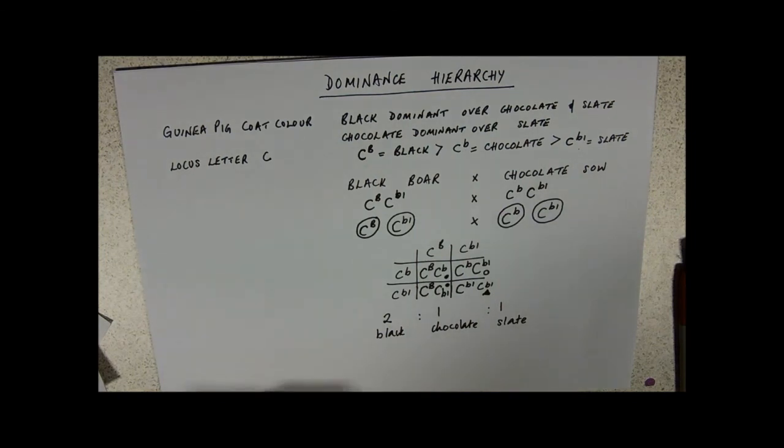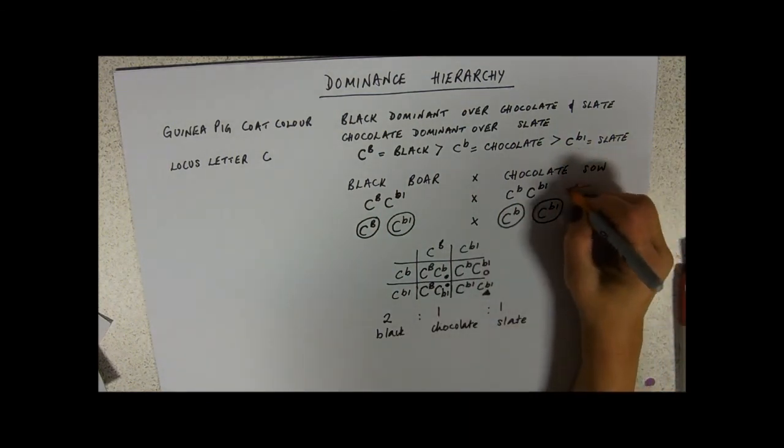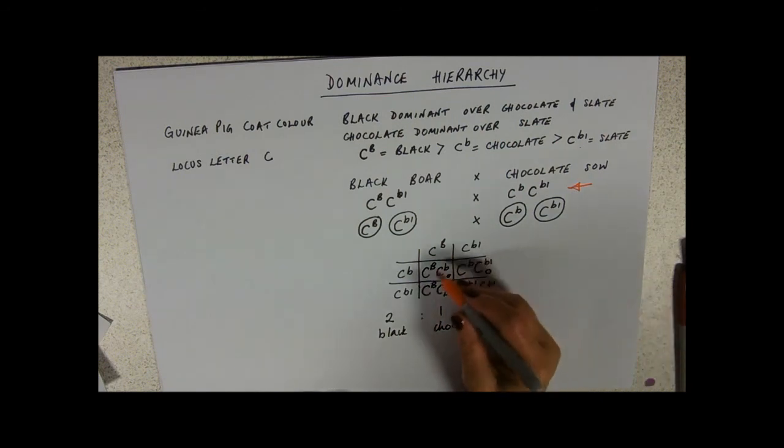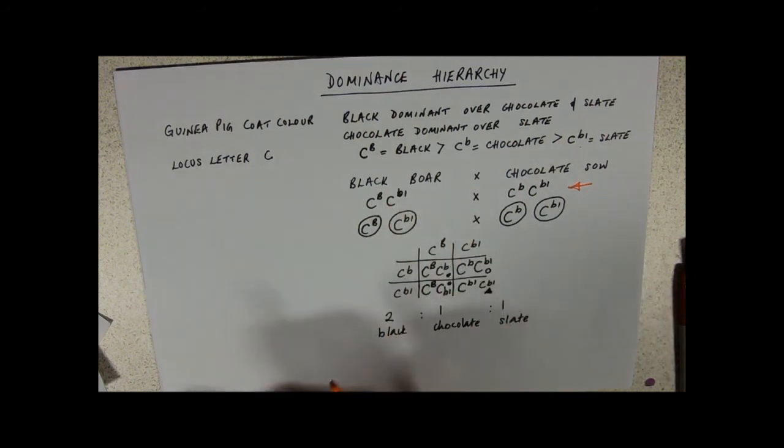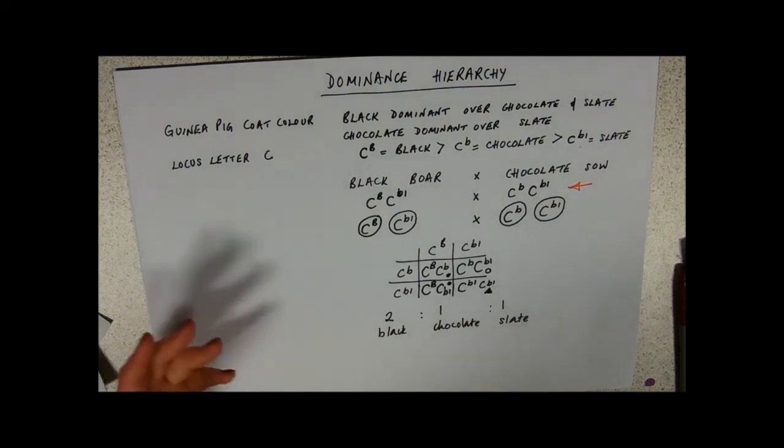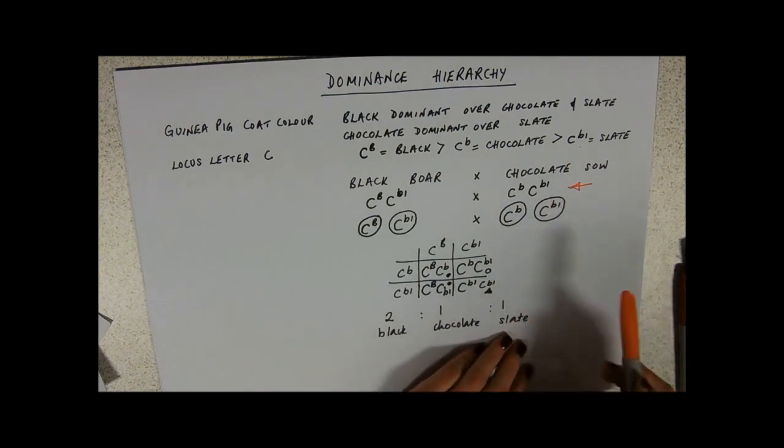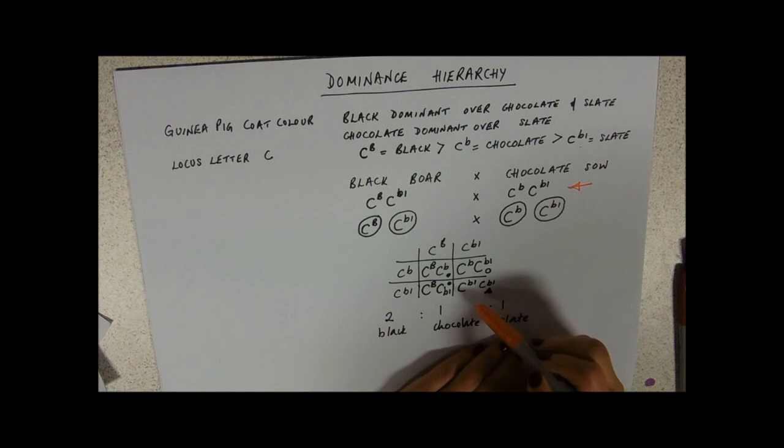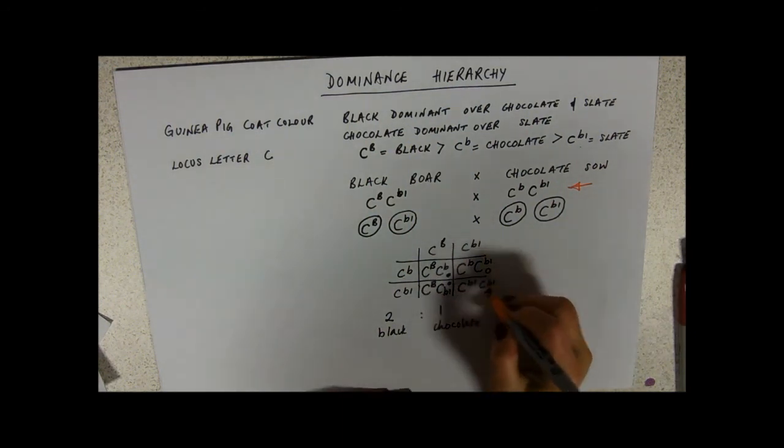But they're unlikely, usually in genetics questions, to tell you the parental genotype. They're unlikely to tell you that. That's the thing you've got to work out. So, what they're most likely to tell you is that a black boar and a chocolate sow were mated a number of times. And they got 57 black guinea pigs and 26 chocolate guinea pigs and 23 slate guinea pigs. And how is that possible, having given you this dominance hierarchy here? And so, you really need to start off with, if you've got slate guinea pigs and that's the most recessive one, you need to start off with this one. That's where you would start.